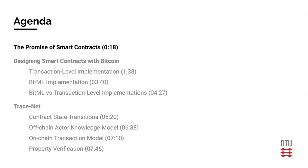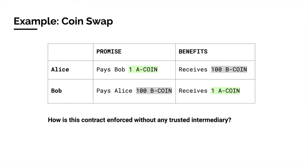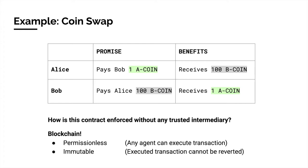Let's start with the promise of smart contracts. Consider the following example: a coin swap between Alice and Bob. How can we perform this contract without Alice trusting Bob and vice versa, and any other trusted intermediary? This is where blockchain promises to provide a solution, because new transactions can be posted by anybody — it is permissionless — and posted transactions appended to the blockchain are immutable; they cannot be reverted.